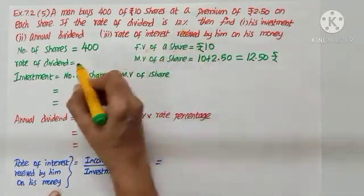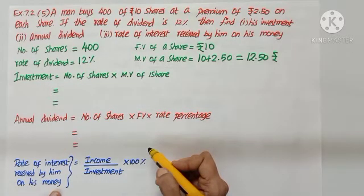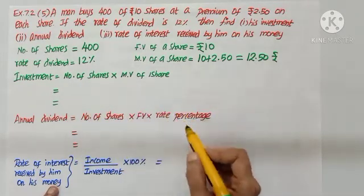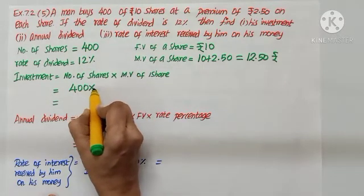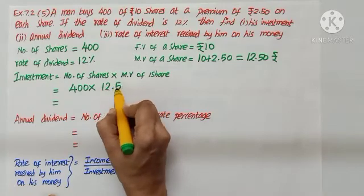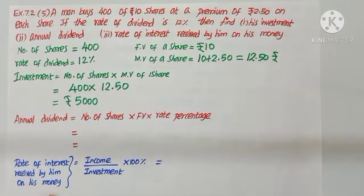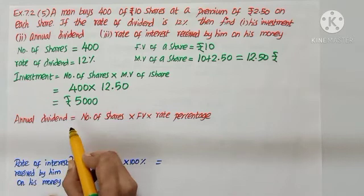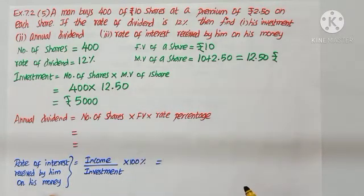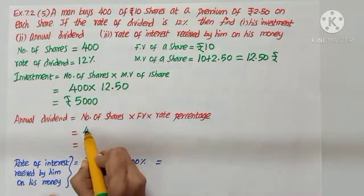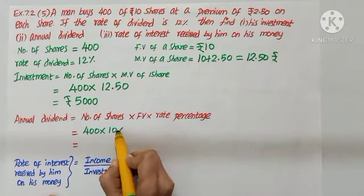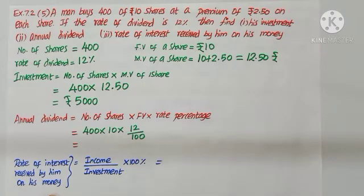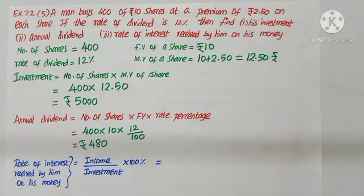Rate of dividend is 12%. First question is investment. Formula: number of shares into market value of one share — 400 into 12.50. We get Rs. 5,000. Second part: annual dividend equals number of shares (400) into face value (10) into rate percentage 12 by 100. We get Rs. 480.